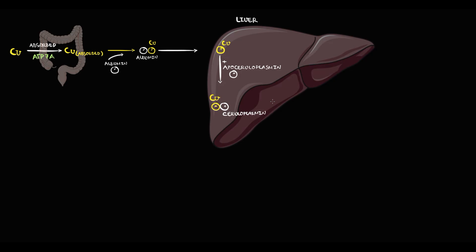Ceruloplasmin is basically apoceruloplasmin fully packed with copper. And this packing of copper is provided by ATP7B protein, which is also called copper ATPase. Once ceruloplasmin is formed, this molecule leaves liver tissue and through the bloodstream ceruloplasmin delivers copper to peripheral tissues.